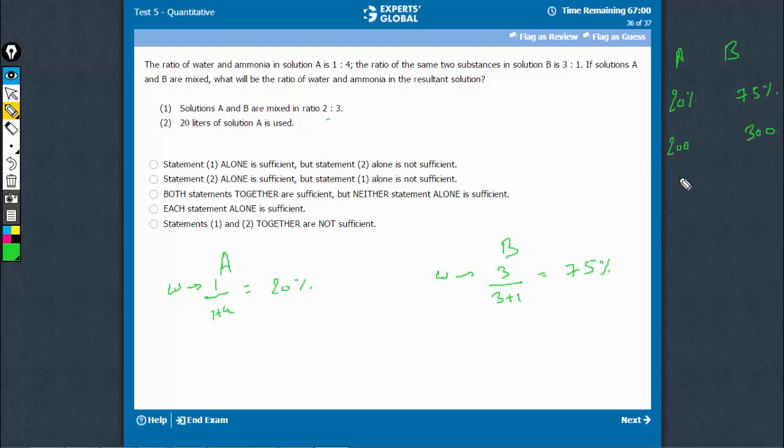We can assume values as 200 and 300, but it doesn't actually matter. 20% of 200 is 40, and 75% of 300 is 225. We don't have to waste time calculating exactly—the total water would be 40 plus 225, which is 265 out of 500 total.